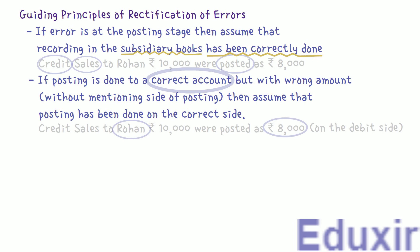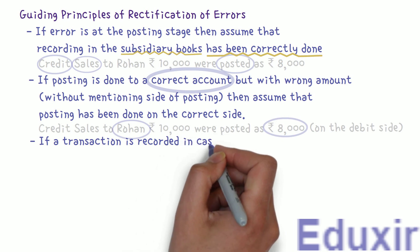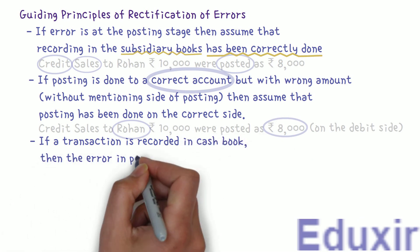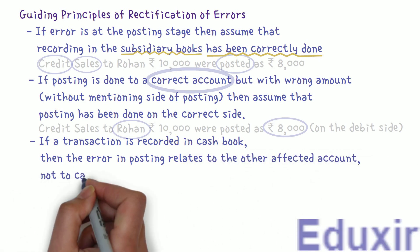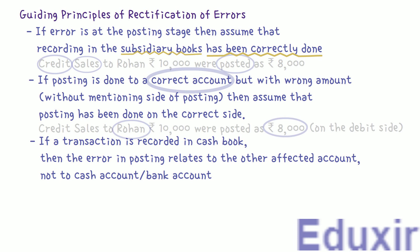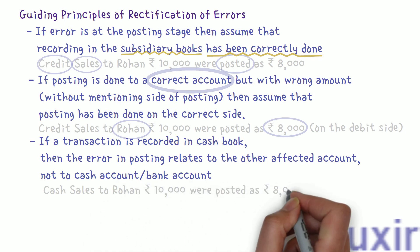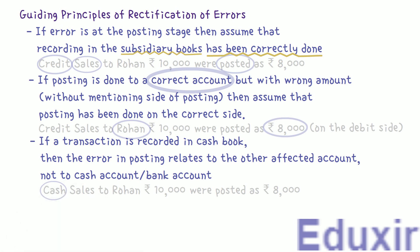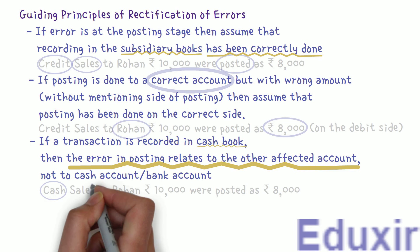One more guiding principle: if a transaction is recorded in the cash book, then the error in posting relates to the other affected account, not to the cash account or bank account. For example, if the error is stated as cash sales, 10,000 rupees were posted as 8,000 rupees — as this is cash sales, it is recorded in the cash book, so we assume the cash account is correct. The error therefore relates to the other affected account, which is the sales account.